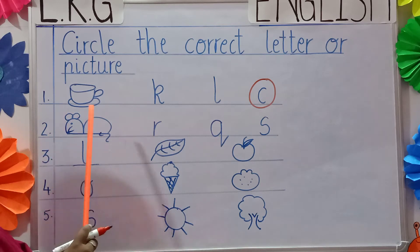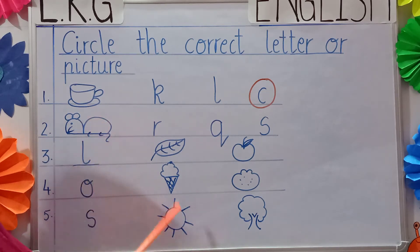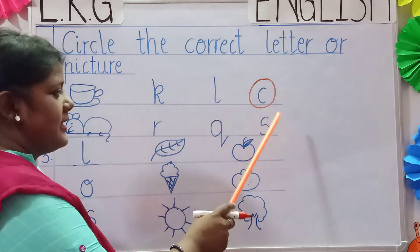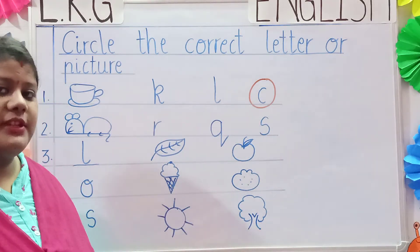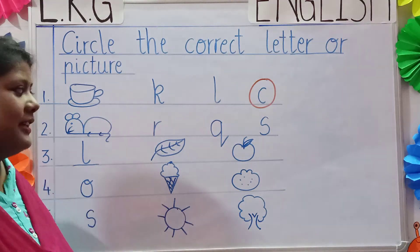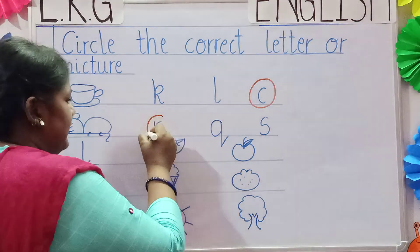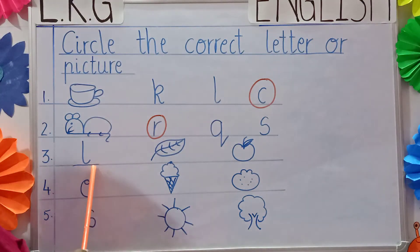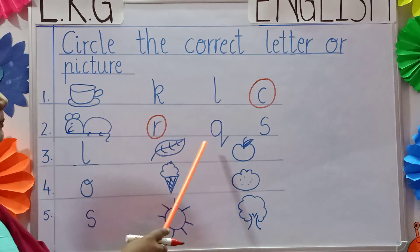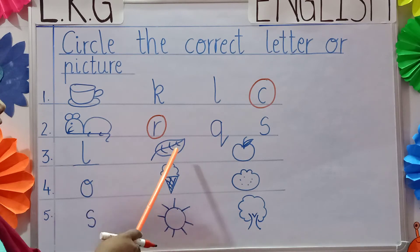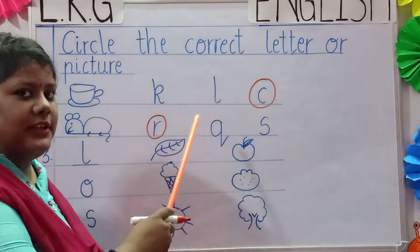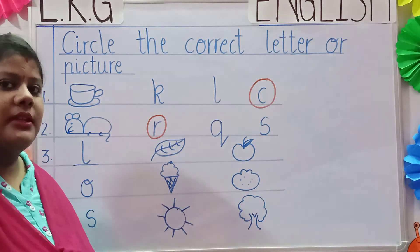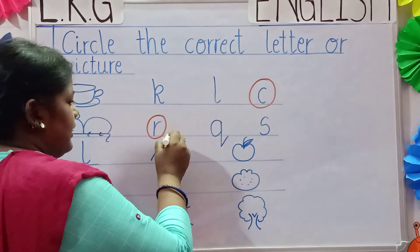Now see number 2 children. It is a picture of a rat, and over here R, Q, S — three letters are given. Which letter will we circle? We will circle the letter R. Now see number 3. L is given and two pictures are given — a picture of a leaf and an apple. Which picture will we circle? We will circle the picture of the leaf.